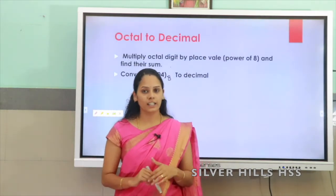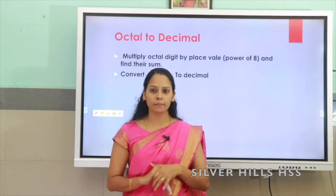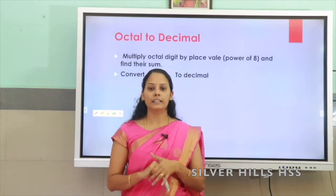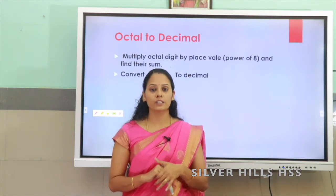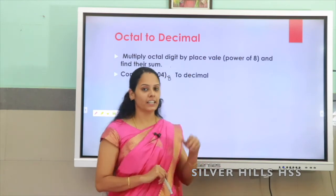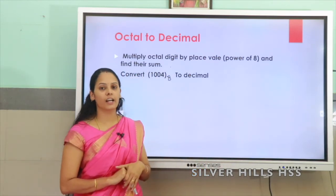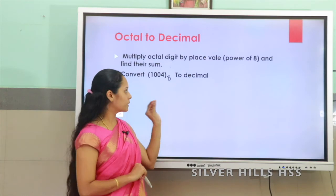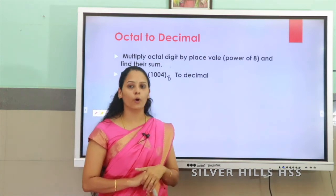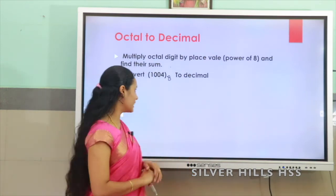To convert an octal number to decimal we are using the multiplication method, multiplying using the powers of 8. The octal number has base 8, and that is why we use multiplication by the place value or powers of 8. Let us take an example.